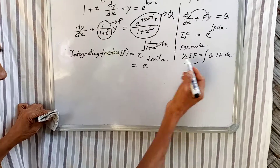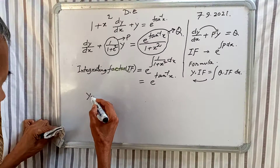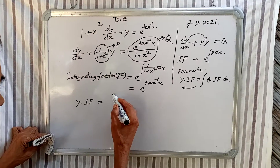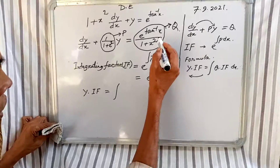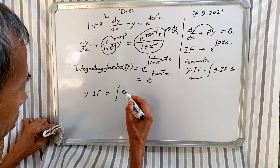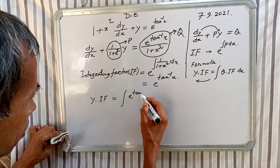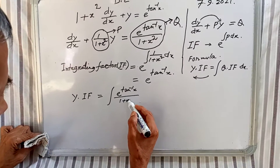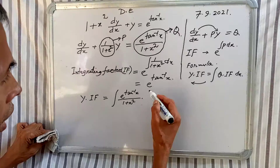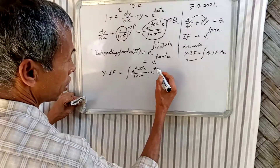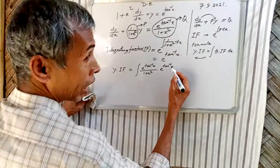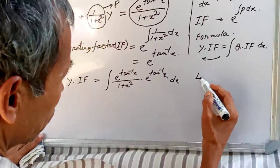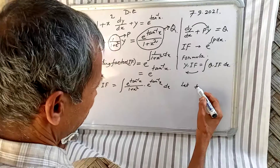Using the formula y · IF = integration of Q · IF dx. So y · e^(tan⁻¹x) = integration of [e^(tan⁻¹x) / (1 + x²)] · e^(tan⁻¹x) dx.